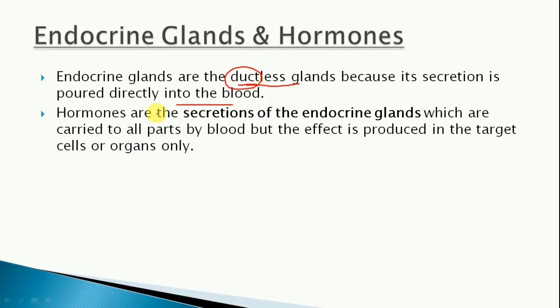Hormones are the secretions of the endocrine glands. These hormones are carried to all parts of the body by the blood, but the effect is produced in the target cells or organs only. A hormone needed in a particular organ will act in that particular organ only, not in any other organ. Hormones are also called chemical regulators because they are chemicals that regulate the complex processes.